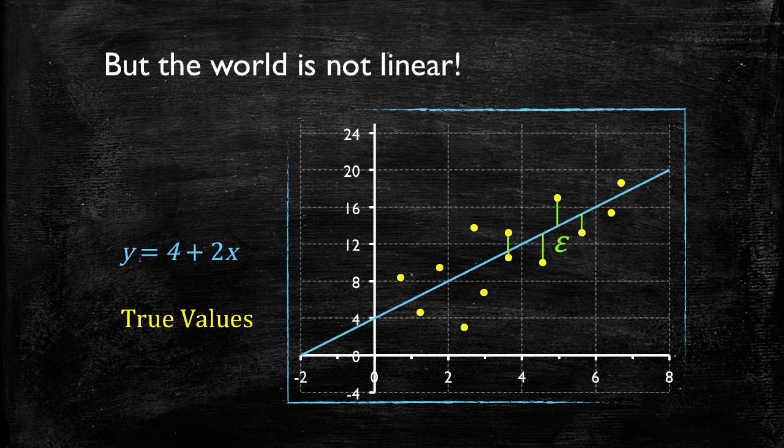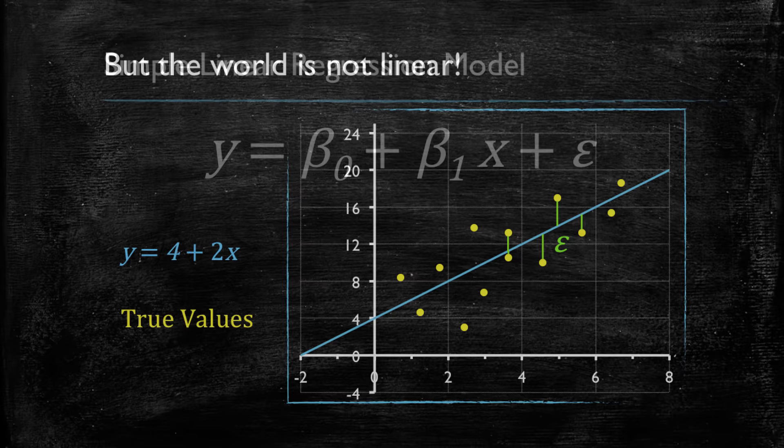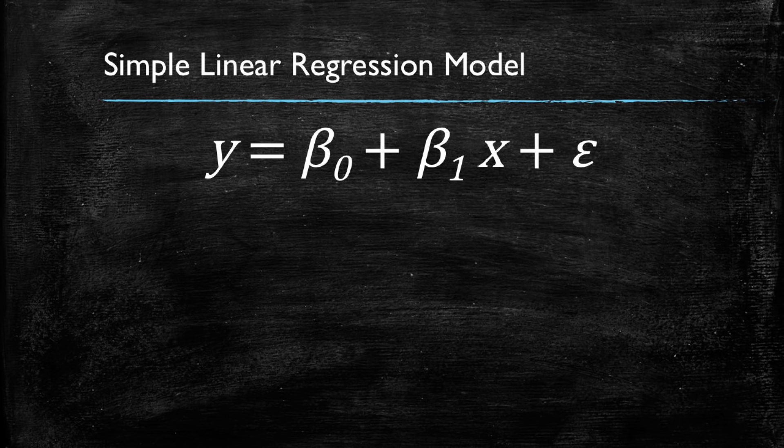But the important aspect we're going to take away now from this is that our linear regression model must include this error into it. So this is how our linear regression model looks like. It is y equals beta zero plus beta one times x plus the error term. So let's recap.